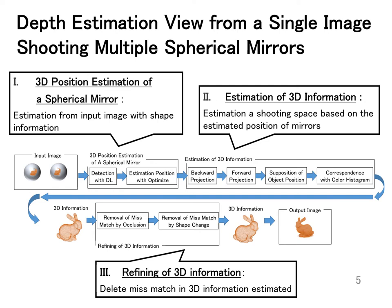In this paper, we estimate the depth of space in the following three steps. First, we estimate the 3D position of the spherical mirror in the image. Second, we estimate the depth of the 3D space. Third, we refine the estimated 3D information.